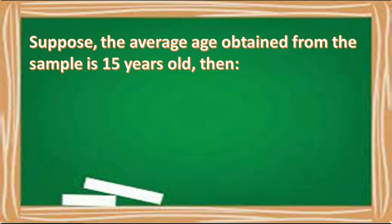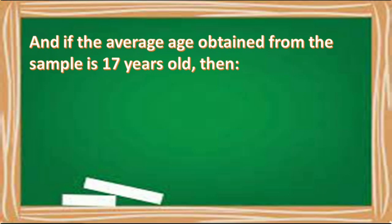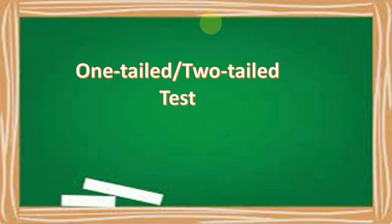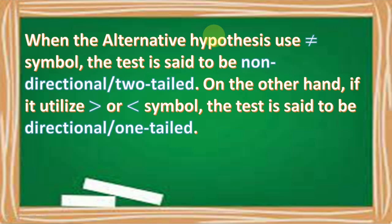Suppose the average age from the sample is 15 years old, then we use the symbol μ < 16. And if the average age from the sample is 17 years old, we use the symbol μ > 16. When the alternative hypothesis uses the not-equal-to symbol, the test is said to be non-directional or two-tailed.